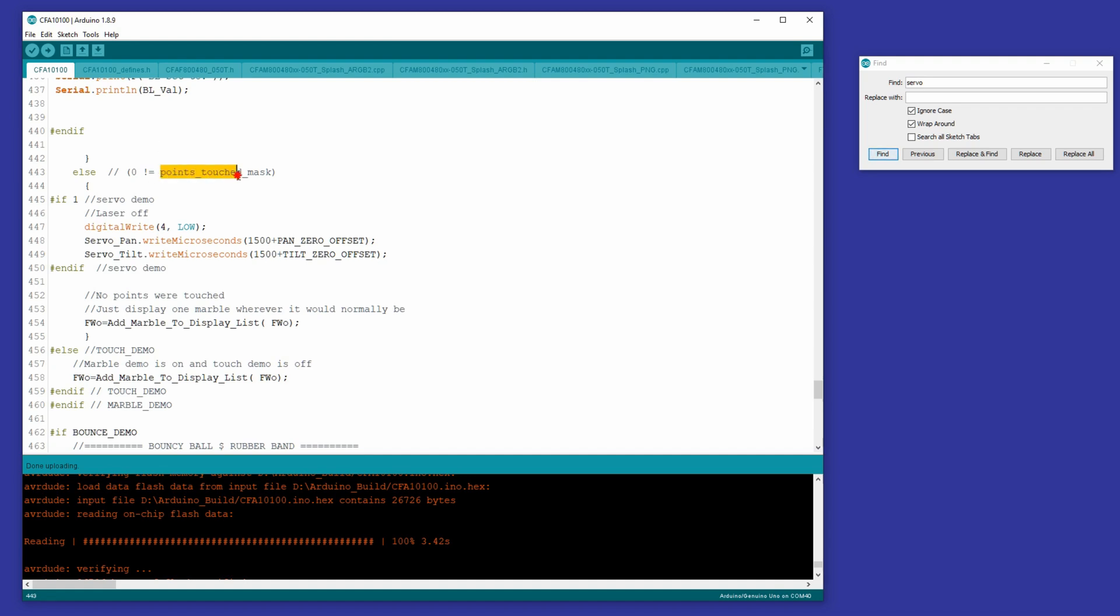So this is the part of the code where there's no points touched at all. And so for the servo stuff, we just say turn the laser off. So we write that port to zero.